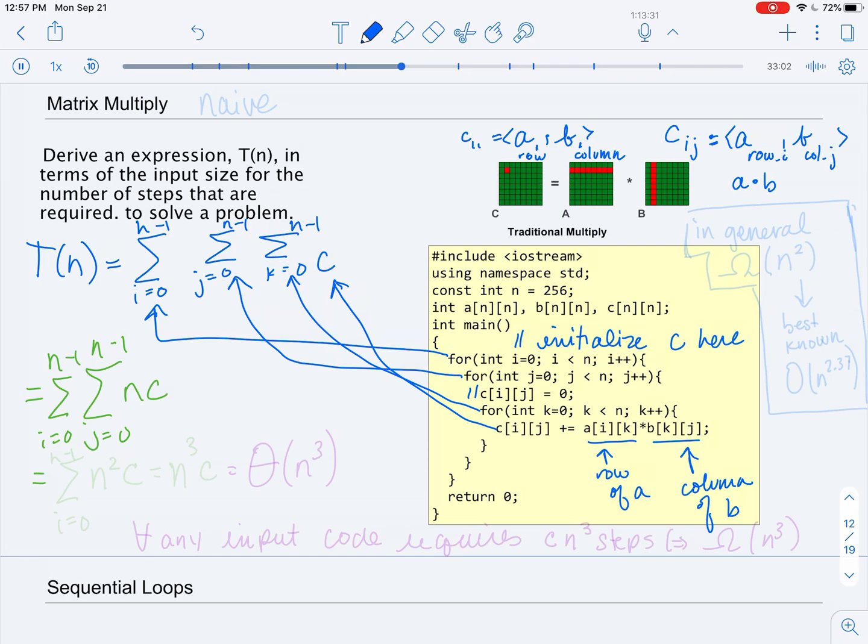So then, once again, I am adding n times for the j indexed for loop, so this is going to become n squared C. And it's going to be the summation as i goes from zero to n minus one.